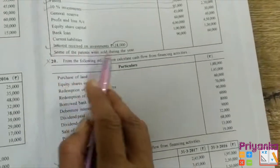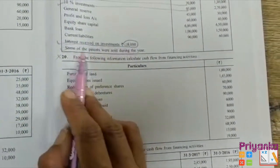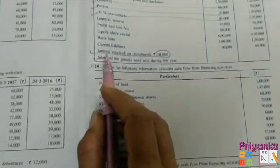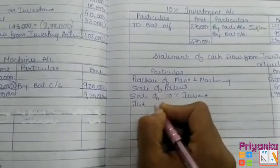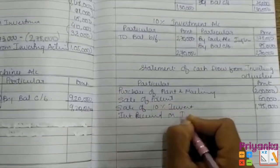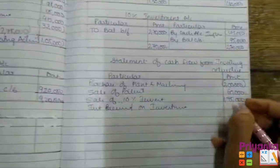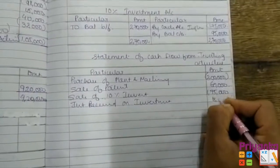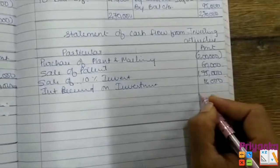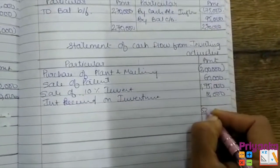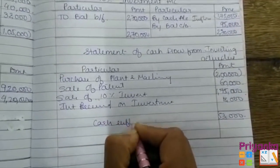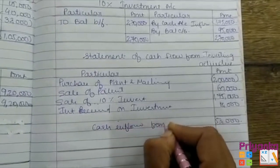Here, interest received on investment — 18,000 — will be counted. The sale of some patents was already given an entry. Interest received on investment will be recorded and shown as an inflow of amount 18,000. Now we will make a total of the inflows and get the minus with the 2 lakh outflow. We get a difference of 53,000, which shows cash inflow from investing activity.